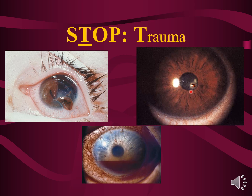A corneal foreign body is another traumatic cause — classically from working under a car or hammering or grinding metal on metal. With metal-on-metal injuries you must think not only about a corneal foreign body but potentially an intraocular foreign body, in which case a CT scan and/or X-ray is needed. Finally, a hyphema — a classic blunt injury causing bleeding inside the eye filling it with blood — also requires an urgent ophthalmology consult.